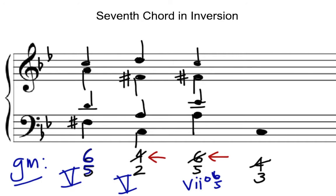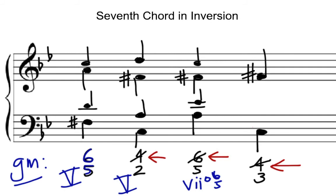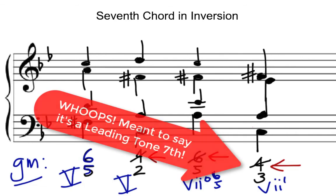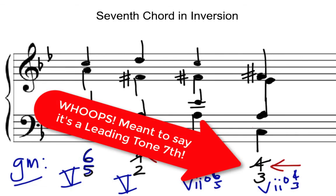The last chord: 4-3 is a second inversion. To figure out the root of a 4-3, go down two thirds or down a fifth — and we get F. Because of the slash through the four, whatever is a fourth above the bass C (which is F) gets raised to F sharp. Let's put the F sharp in the soprano. The 3 will be an E flat — I'll put that in the alto. And all we need is an A for the tenor. That's a dominant 4-3. And that's part-writing 7th chords.